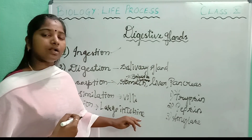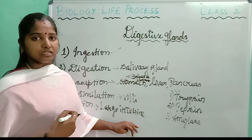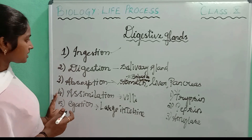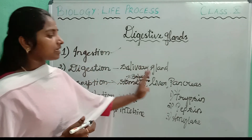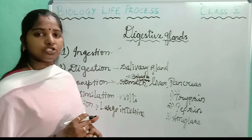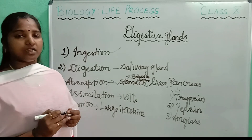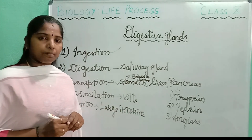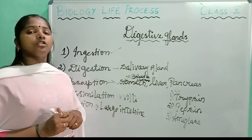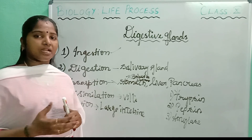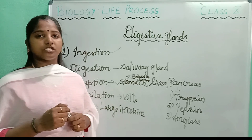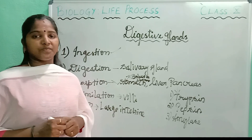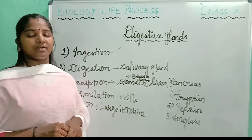The last step is ejection, which is associated with the large intestine. The colon and rectum collect all the waste — the colon absorbs water molecules and the rectum collects the feces, which are sent out of the body through the anus. I hope you have understood today's topic. If you have any queries, you can post your doubts in the comment box. In the next class I'll come with a new topic. Thank you.